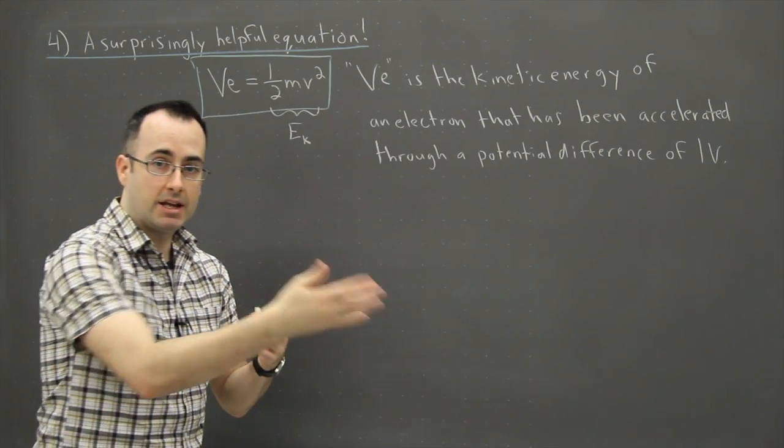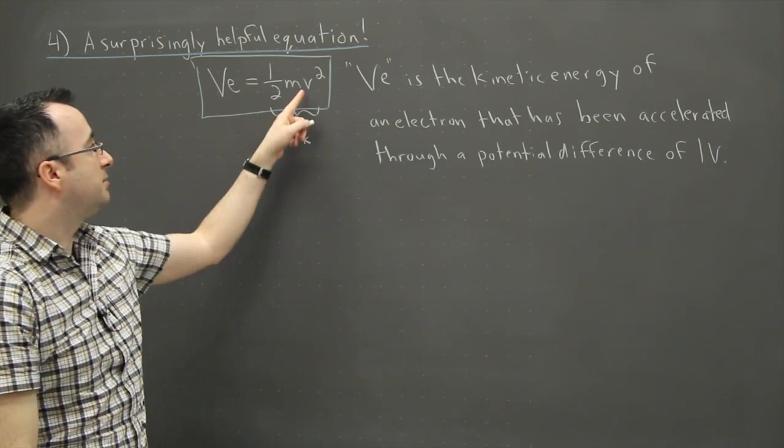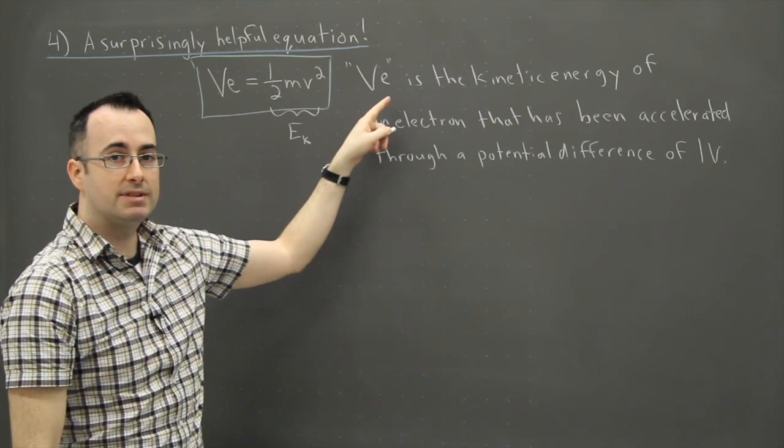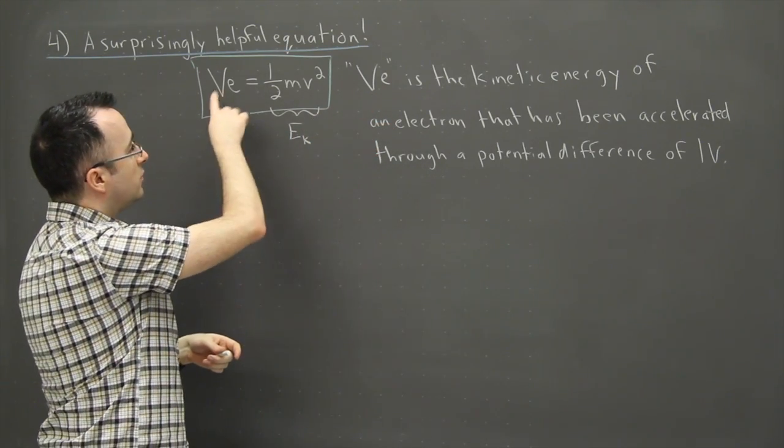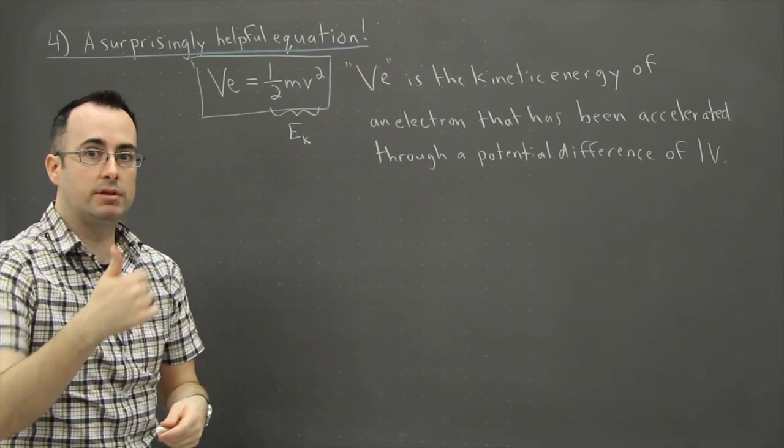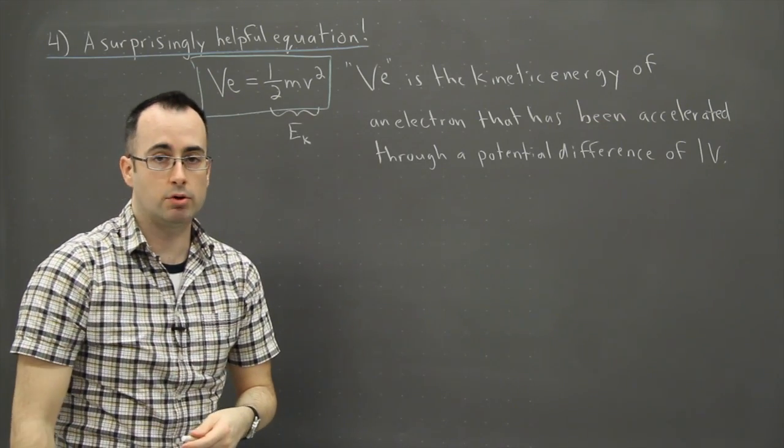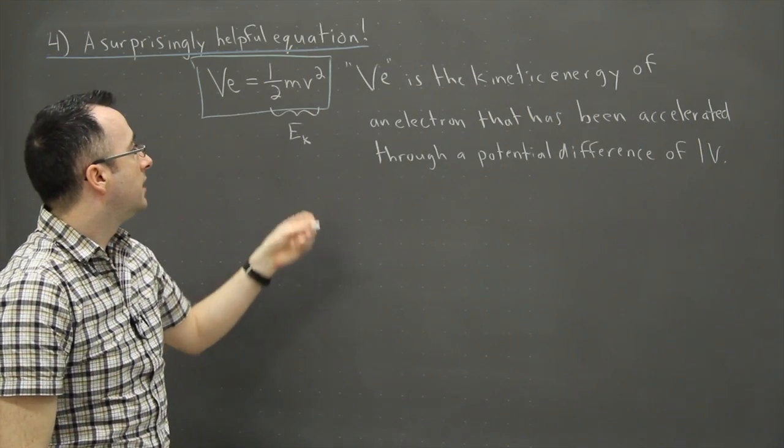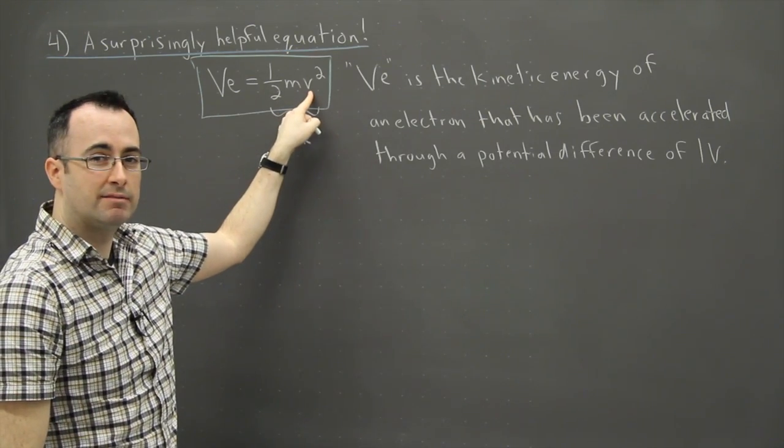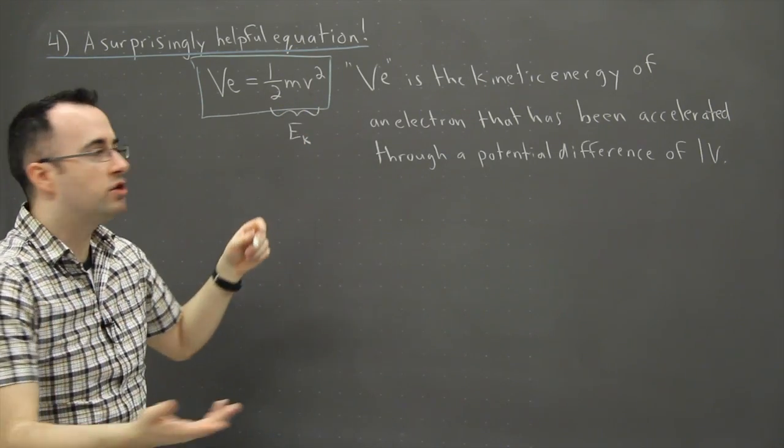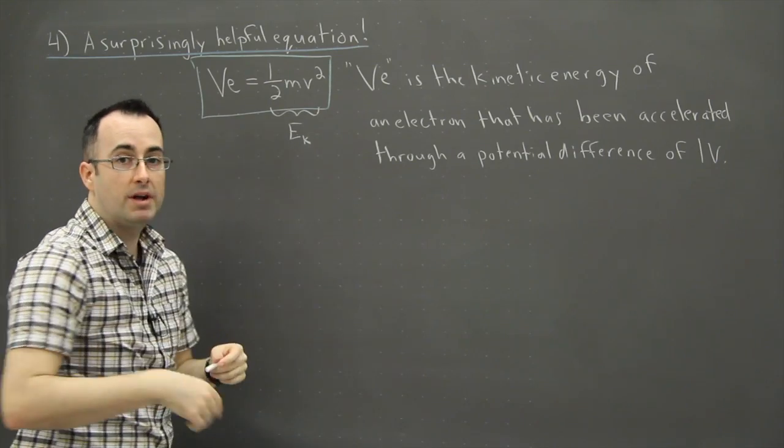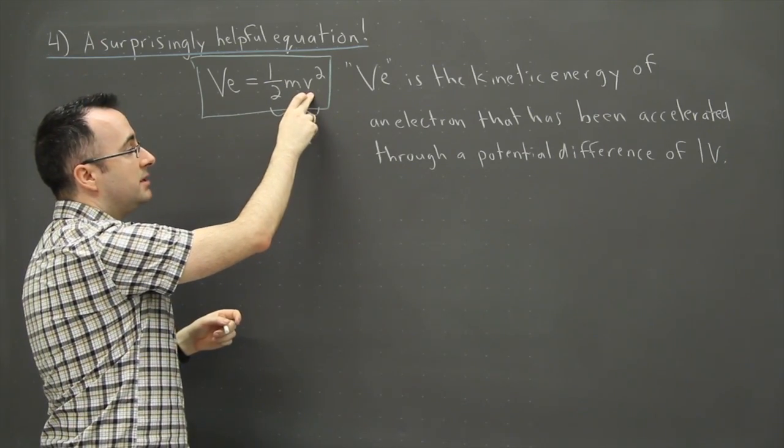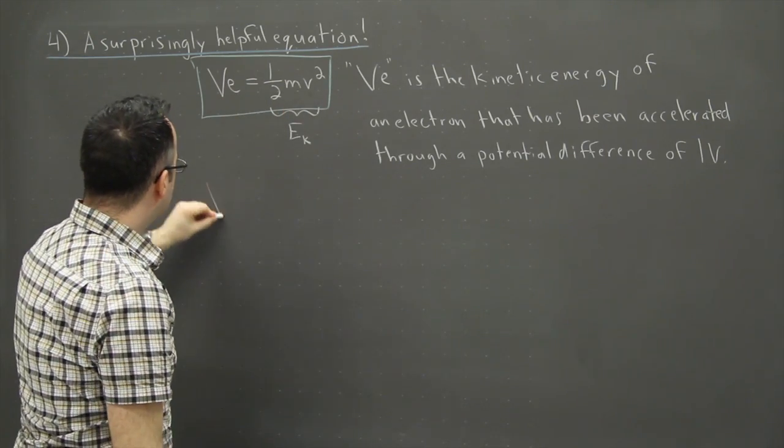And how fast is it going to be going? Well, you can calculate its speed because this VE represents the kinetic energy. And so if you wanted to, if you're told the voltage that it goes through, or if you're told the charge of the particle, because it could be any particle, then you can actually calculate its speed. You might be asked, what's its kinetic energy? Well, it's just V times E. Or what's its speed? You can use that to actually get its speed.